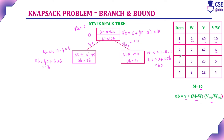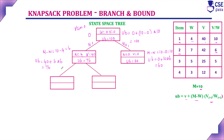Next step, consider item 2 similarly. If adding item 2, it goes to the left subtree; if not, right subtree. With item 2: previous weight is 4, plus item 2's weight of 7 gives 11 total. Our maximum capacity is 10 only — adding item 2 gives 11, so this is not feasible. This is a dead end because it destroys the problem constraint. So we should not consider this node.